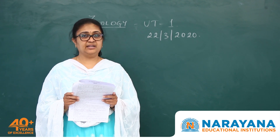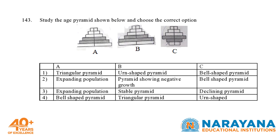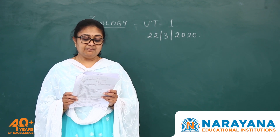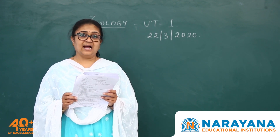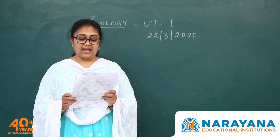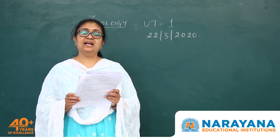Question 143: from the three pyramids given in the paper, you have to choose the correct option. Pyramid A is clearly that of an expanding population. Pyramid B is that of a stable population. Pyramid C is that of a declining population. So the third option is correct.